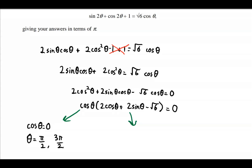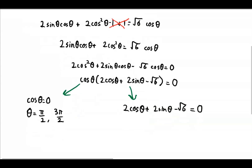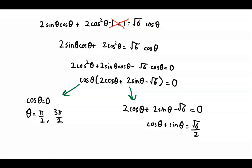The second case is when 2 cos theta plus 2 sine theta minus root 6 is equal to 0, or in other words cos theta plus sine theta is equal to root 6 over 2.